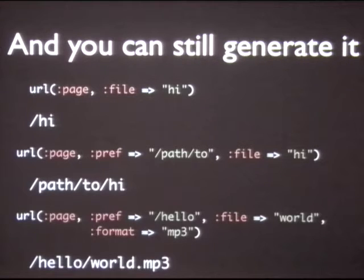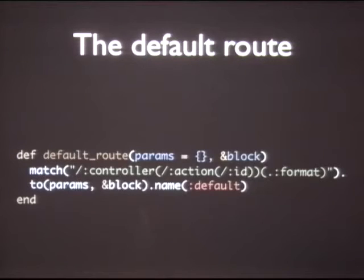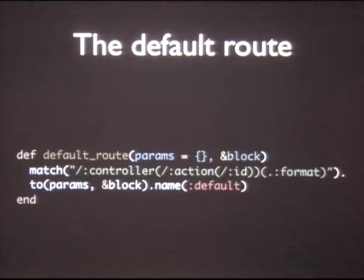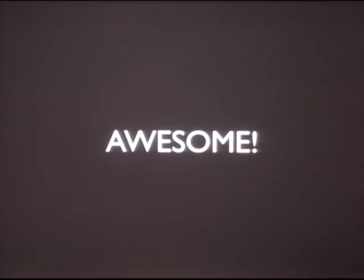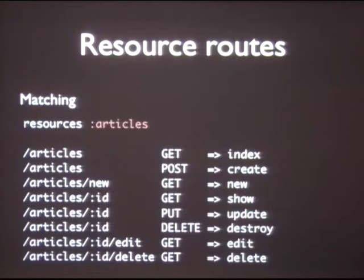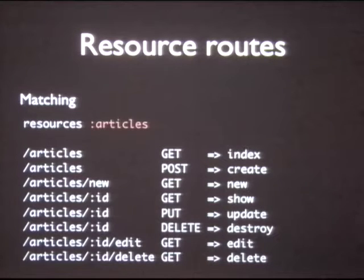This is actually extracted from the Merb code — this is how I implement the default route. It's just a combination of a match and a to: controller, action, ID, format. And if you look at the source code, for the most part it's just a set of match-to named segments, using the features I've shown before.